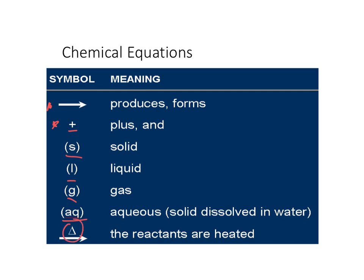If we have an arrow with a triangle above it, that indicates that the reactants have been heated. These are some of the vocabulary words that connect to the symbols we use in our chemical equations. As you can see, there are a lot more words than symbols, so the symbols are good for creating shortcuts and allowing us to easily communicate with one another.